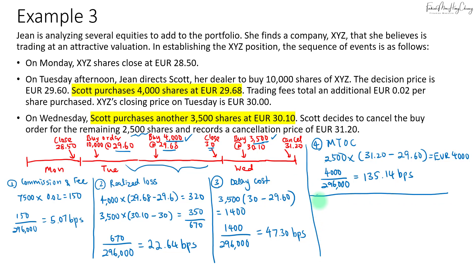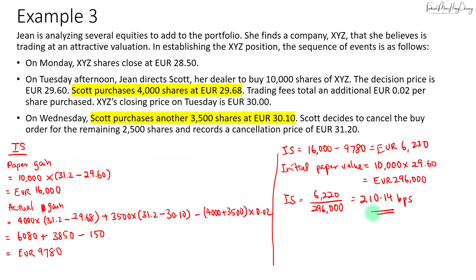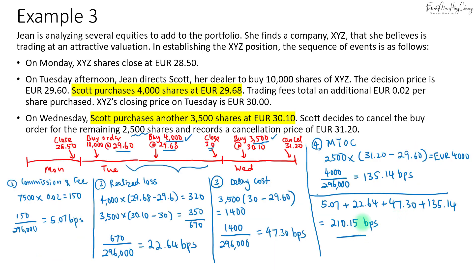Summing up all the components: 5.07 (commission) plus 22.64 (realized loss) plus 47.3 (delay cost) plus 135.14 (missed trade opportunity cost) equals 210.15 basis points. Comparing this back to our earlier calculation of 210.14 basis points — the tiny difference is just a rounding error. So that's how we calculate the individual components. Hopefully through all three parts of these videos you have cleared up any confusion about implementation shortfall.